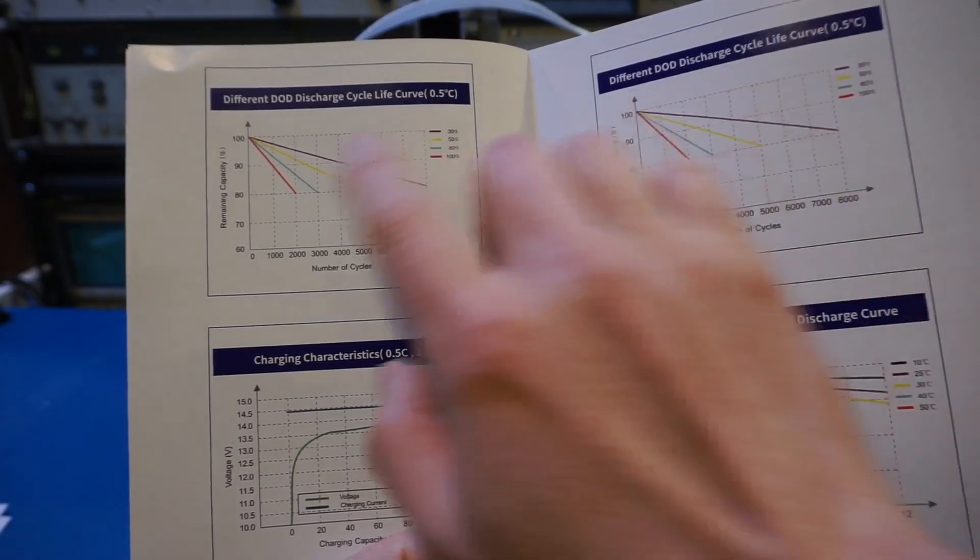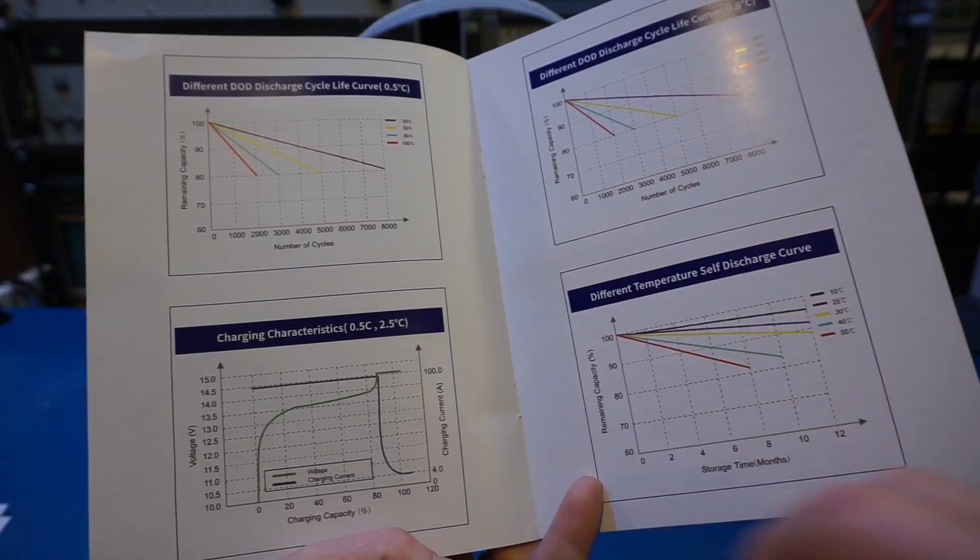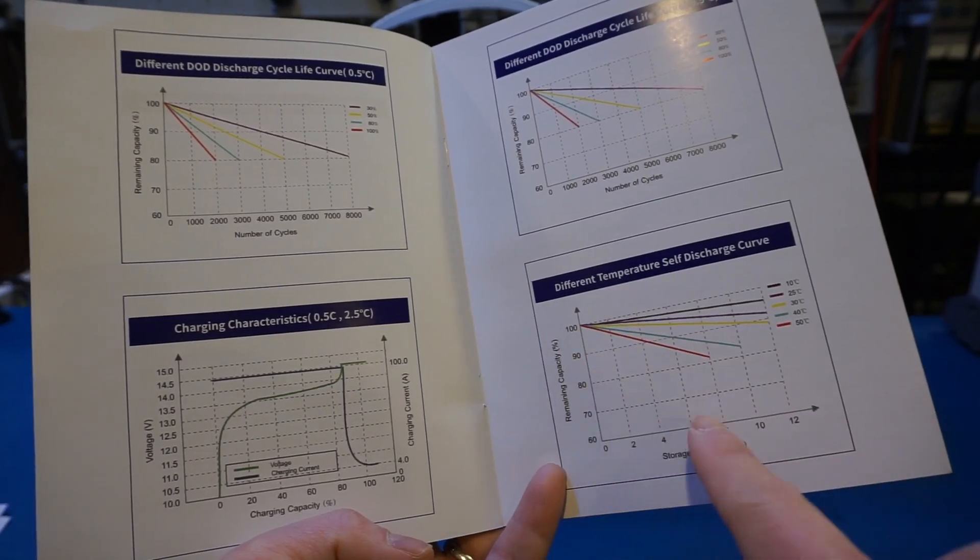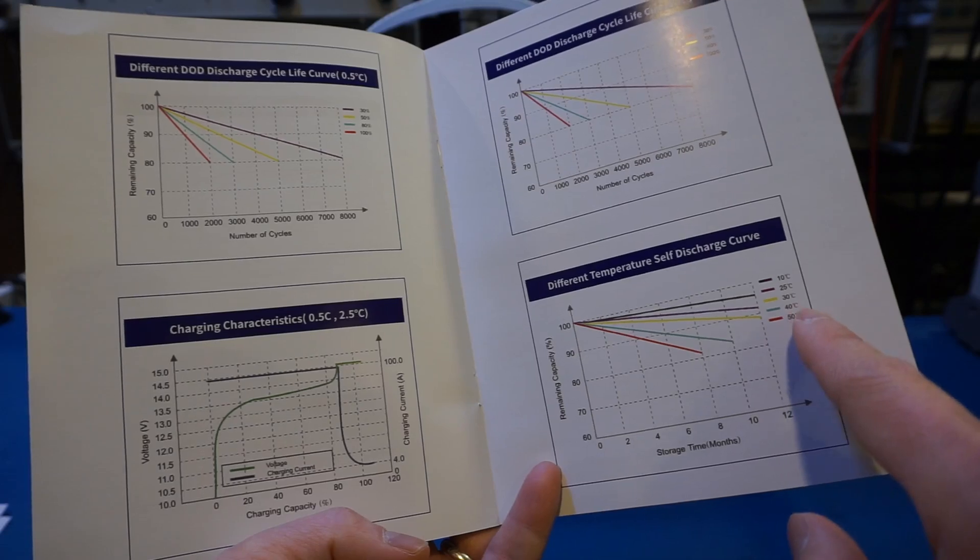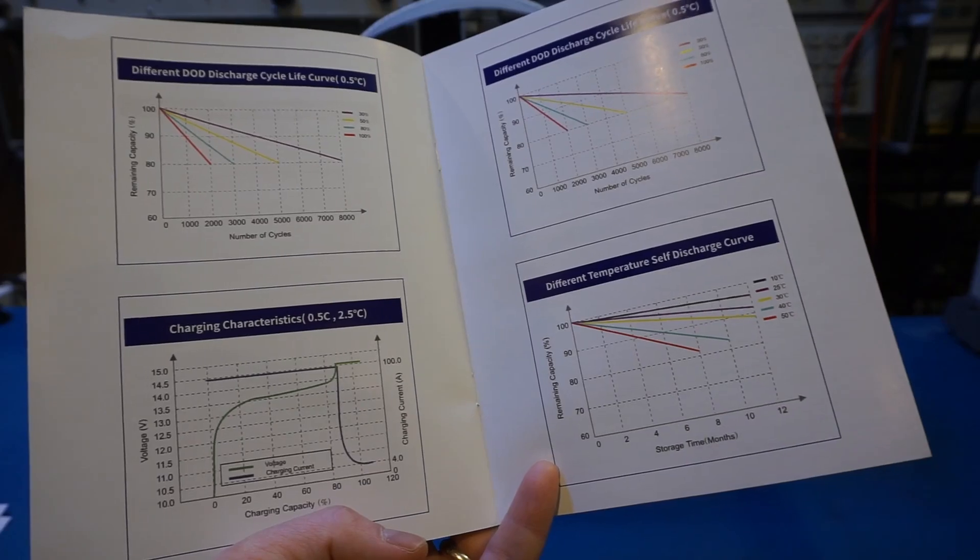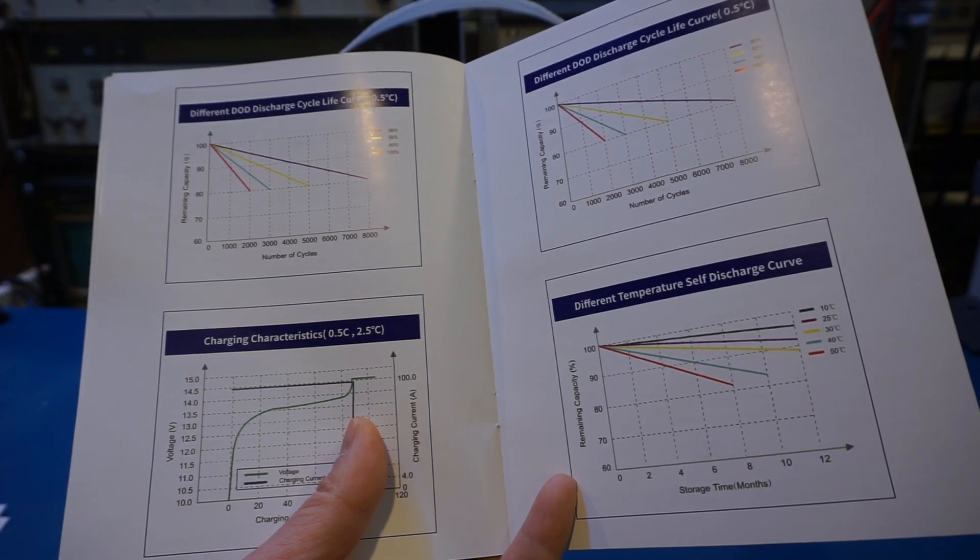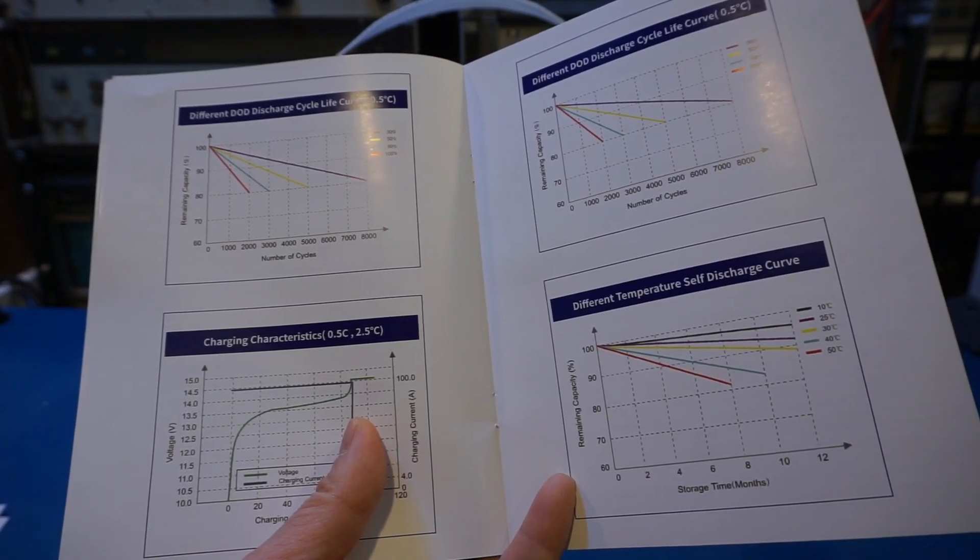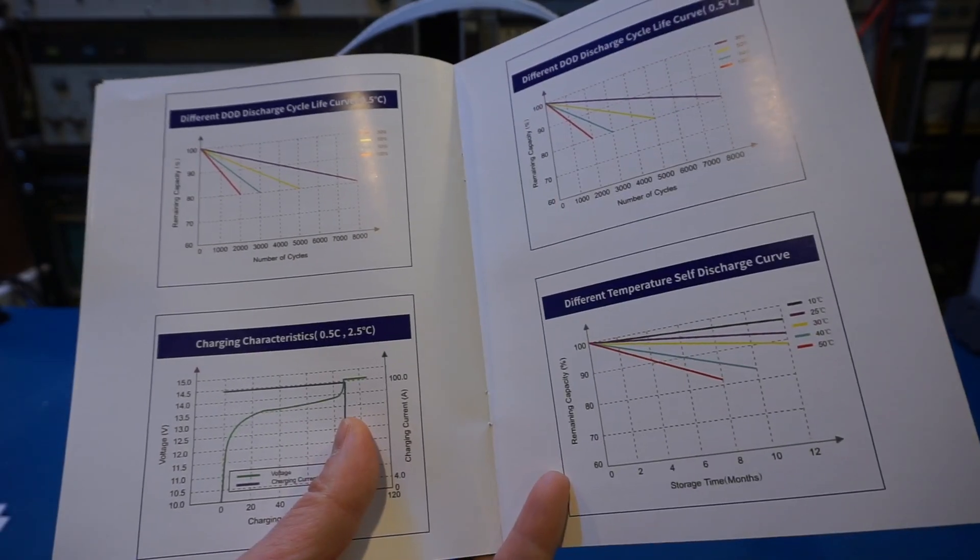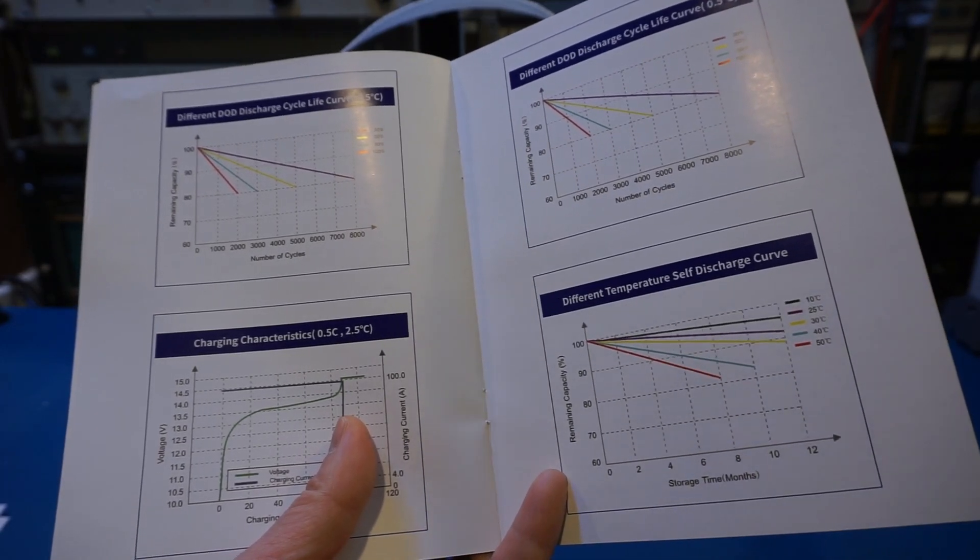Here we also have the charging characteristics and discharge curve against different temperatures. You can see that for LFP batteries the self-discharge is quite low. Even at elevated temperatures of 50 degrees Celsius, with eight months in storage you are still able to maintain 80 percent of the battery capacity. Obviously we have no way of verifying the battery degradation and cycle life in this short video, but I will be using this battery with my other batteries regularly and will report back if I see any issues.